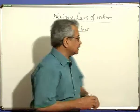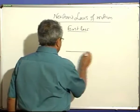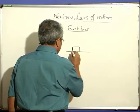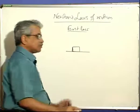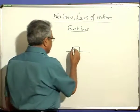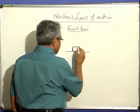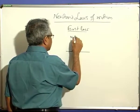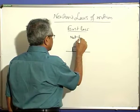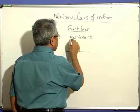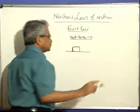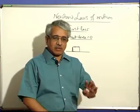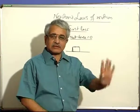Let us take an example. There is a body on a table. The body is not moving. Why is the body not moving? According to Newton's law, the net force on the body must be zero. Newton's law says: as long as no external force acts, the body continues to be in its state of rest.